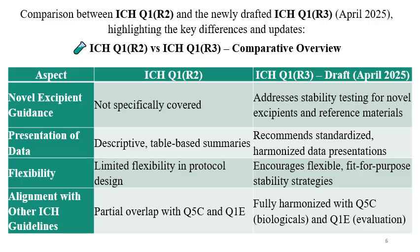Regarding data presentation, earlier guidance relied on descriptive table-based summaries; now it recommends standardized, harmonized data presentations. Earlier, flexibility was limited for protocol design, but the draft guideline encourages flexible, fit-for-purpose stability strategies. On alignment with other ICH guidelines, Q1R2 had only partial overlap with Q5C and Q1E, whereas Q1R3 is fully harmonized with Q5C for biologicals and Q1E for evaluation.